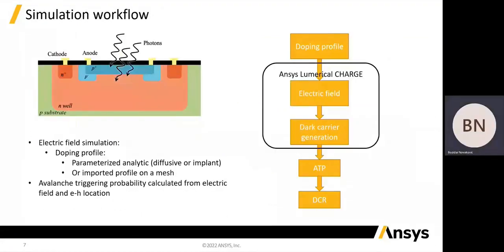This image shows a typical structure and doping profile of a SPAD. The simulation workflow starts with the knowledge of the doping profile. Based on the doping profile, we can calculate the electric field and dark carrier generation using a drift-diffusion Poisson solver like ANSYS numerical charge. From the electrical field, we can find ATP, which when combined with the carrier generation rates, gives the dark count rate. The doping profile in charge can be defined using the available parameterized analytical models, or an arbitrary profile can be imported on a mesh for better accuracy.